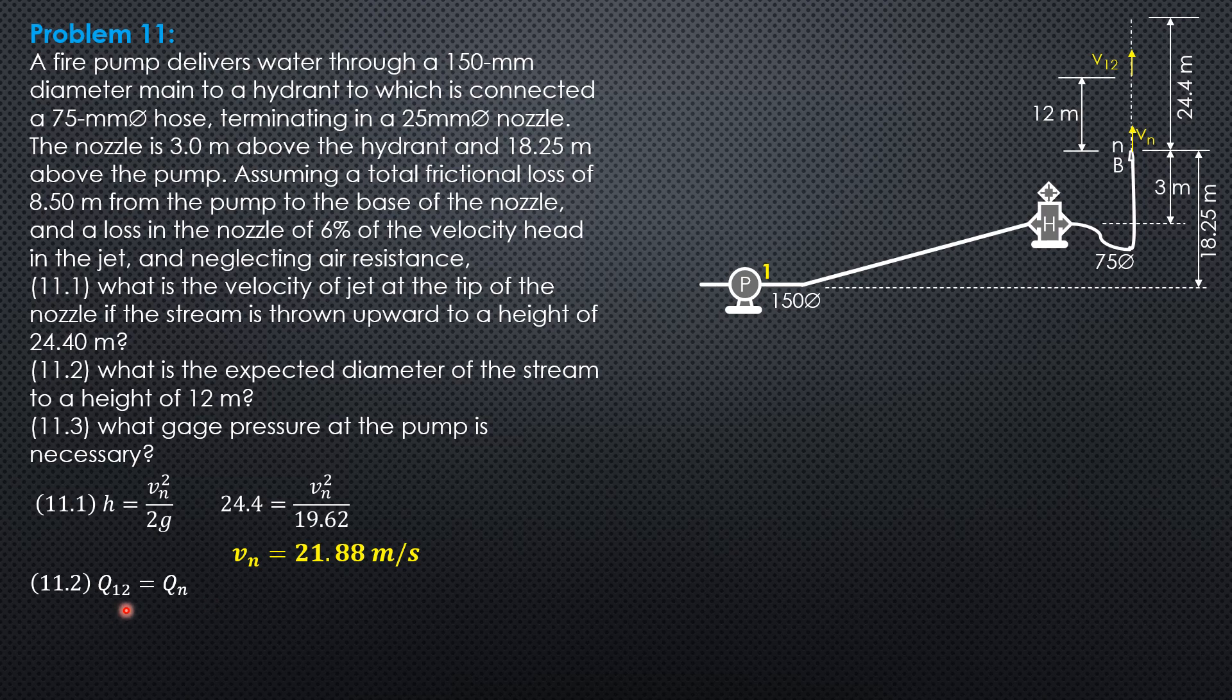Diameter at 12 squared times V sub 12 equals diameter at the tip of the nozzle, 25 mm squared, Vn 21.88. But the velocity at 12 meters, we use V sub 12 squared equals Vn squared, which is 21.88 squared minus 2g times 12, where g is 9.81. So V sub 12 is 15.6 meters per second.